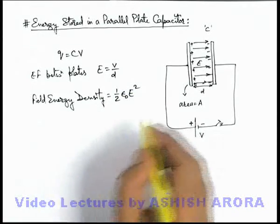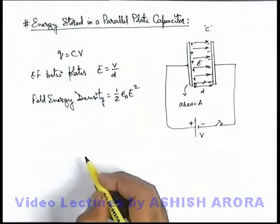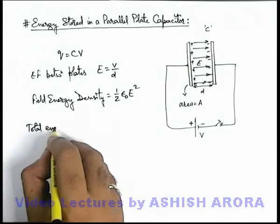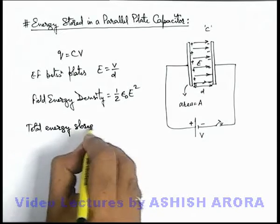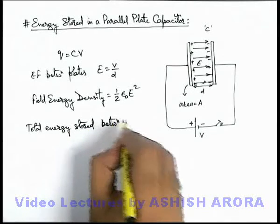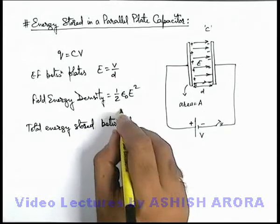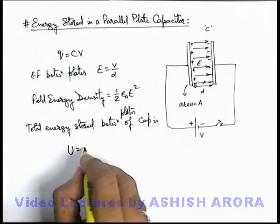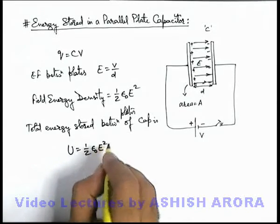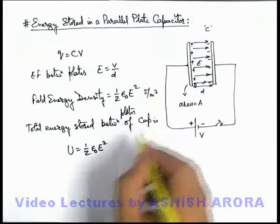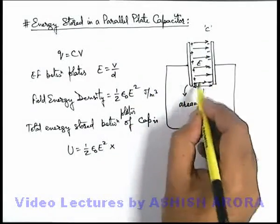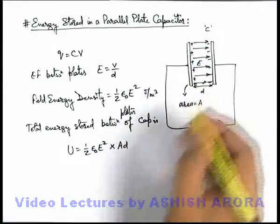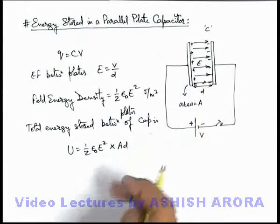So finally after complete charging there exists some electrostatic field energy in the region. We can directly write total energy stored between plates of capacitor. This can be written as U, that is half epsilon not E squared is the energy density which is measured in joule per meter cube, and we multiply with the volume of region in which the electric field exists, that is Ad. A is the area of plate and d is the separation, that is the volume in which this electric field exists.